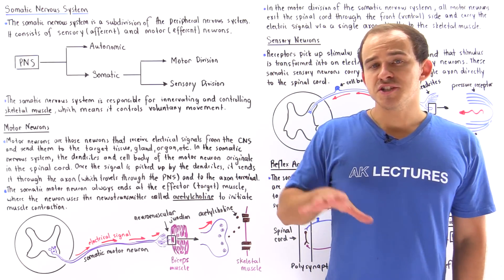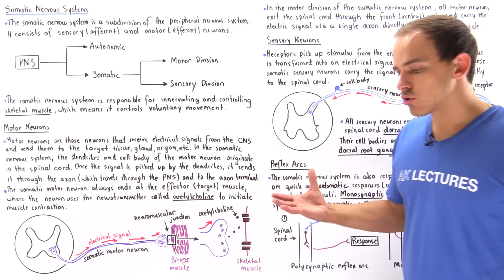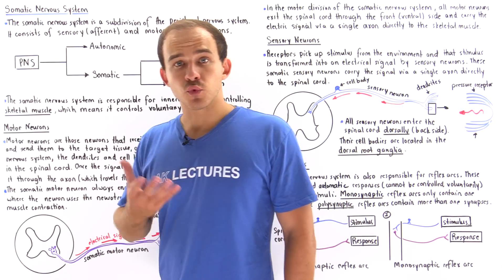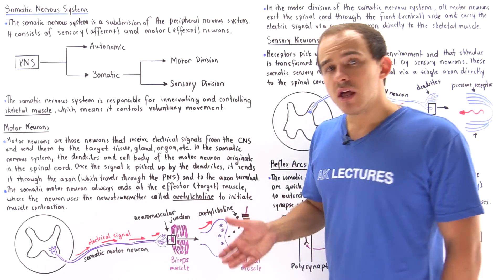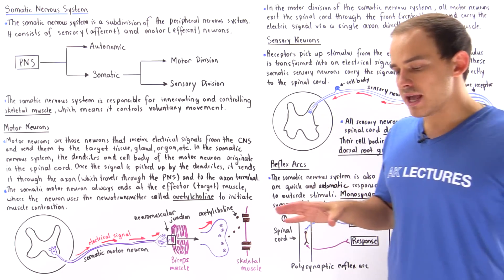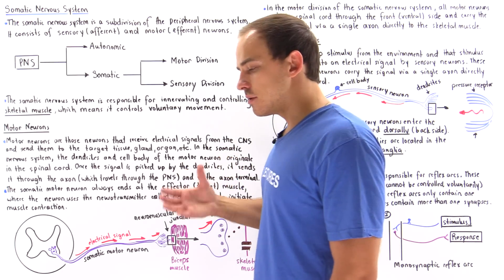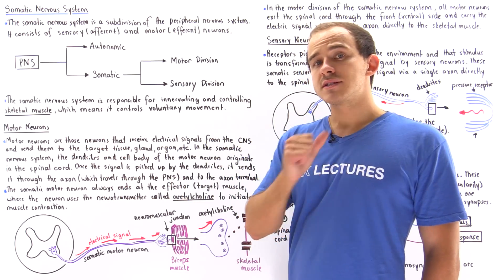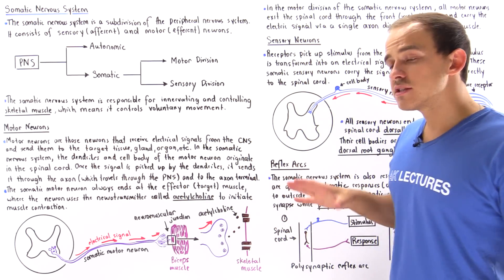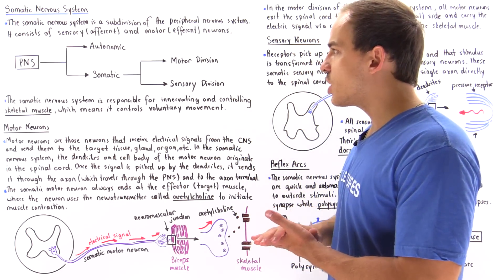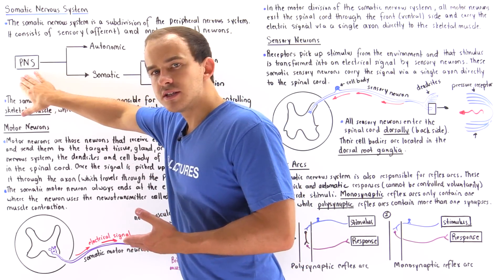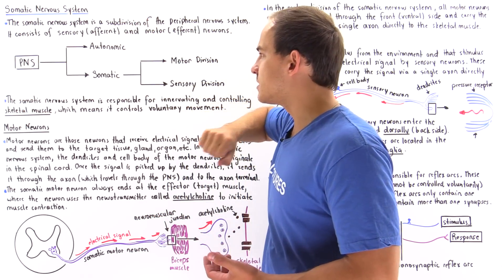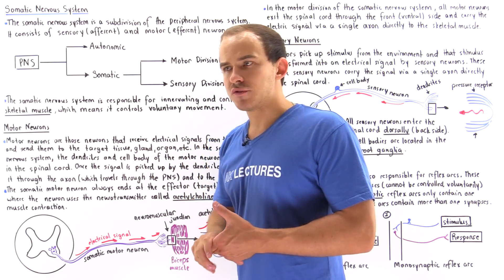The nervous system of the human is broken down into two categories: the central nervous system, which contains the brain and the spinal cord, and the peripheral nervous system. The peripheral nervous system is made up of neurons and support cells found outside of the central nervous system — outside of the brain and the spinal cord. The peripheral nervous system is further divided into the autonomic nervous system and the somatic nervous system.